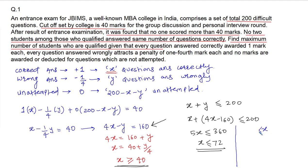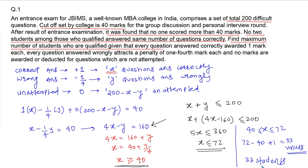Let's combine these two conditions. x can take any value from 40 to 72, both inclusive. How many different values can x take? That's 72 minus 40 plus 1, which equals 33. Every student who qualified answered a different number of questions correctly, so for every student the value of x is different. Therefore, the maximum number of students who qualified for this exam is 33.